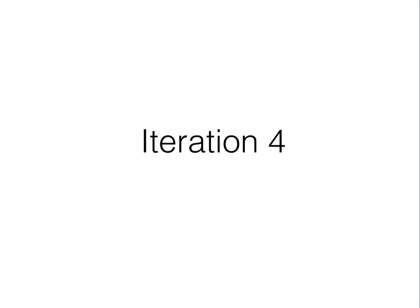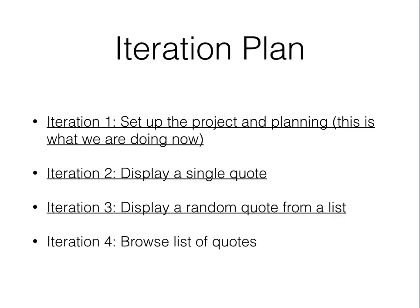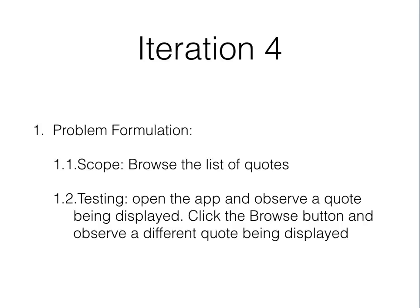We are now ready for iteration number four of the project. We completed iterations one, two, and three. Iteration four is titled 'Browse the List of Quotes.' We started by setting up the project displaying a single quote, then displaying a quote from a list at random. Now we want to be able to browse through the list of quotes, and that's this iteration. We take it step by step and apply the app development process.